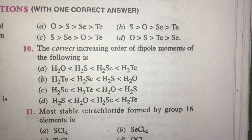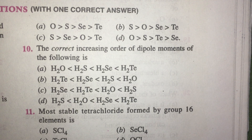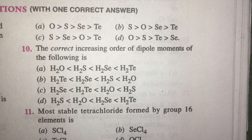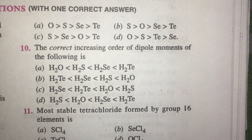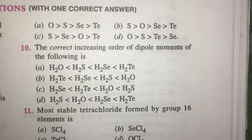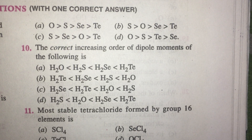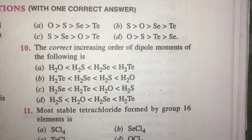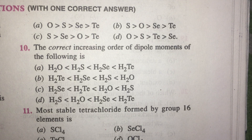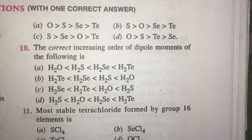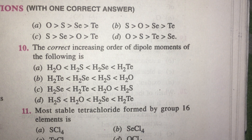The decreasing order of catenation among group 16 elements — catenation means the ability to form long chains and rings. In group 16, sulfur has the highest ability to form such chains and rings. In group 14, carbon is the greatest. In group 16, sulfur is greatest. The answer to question 9 is C.